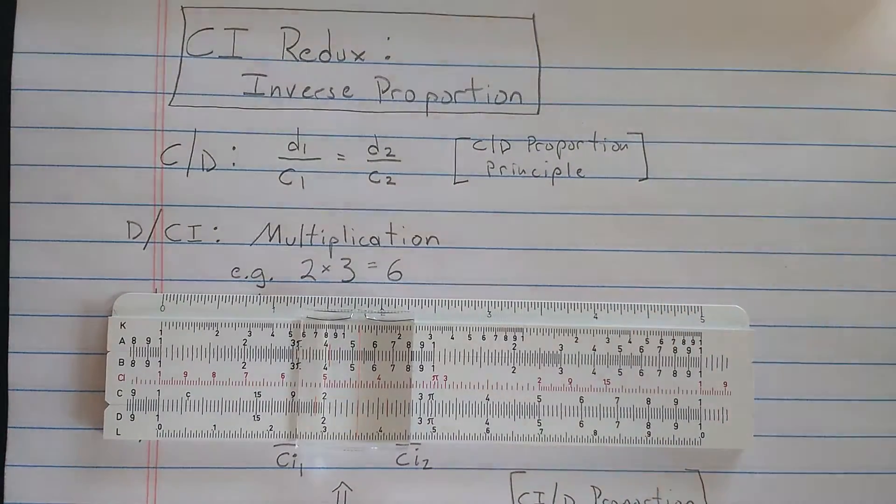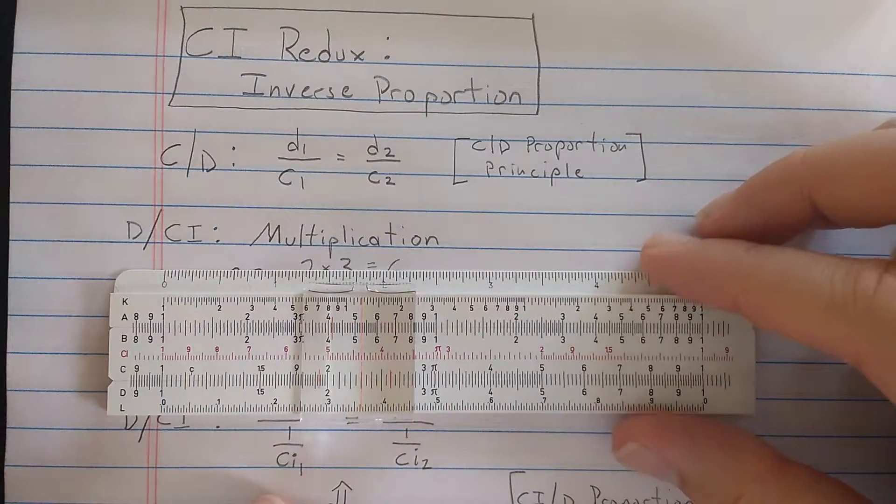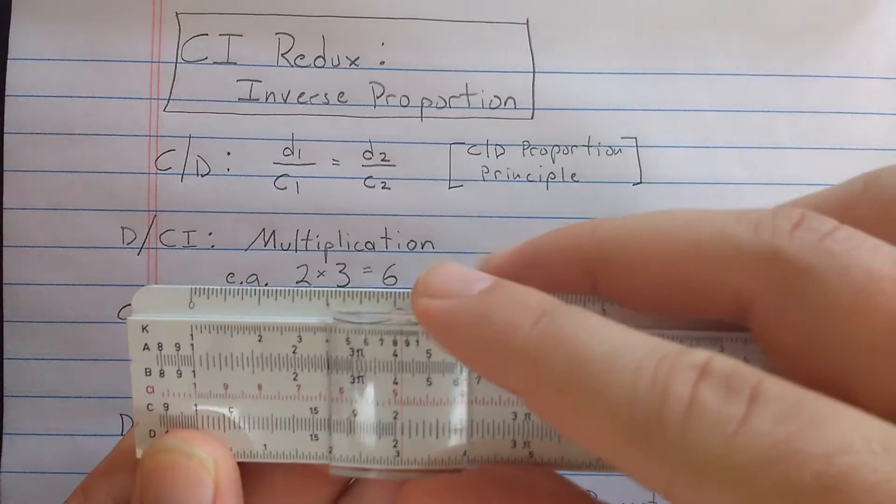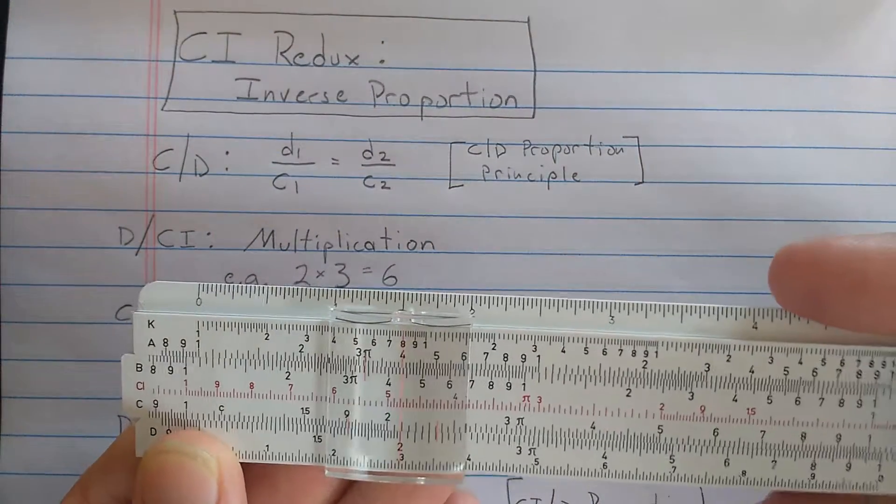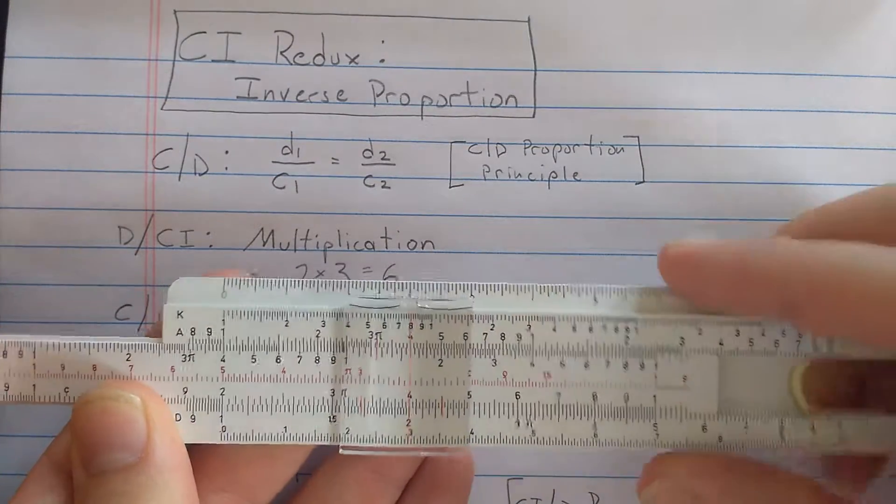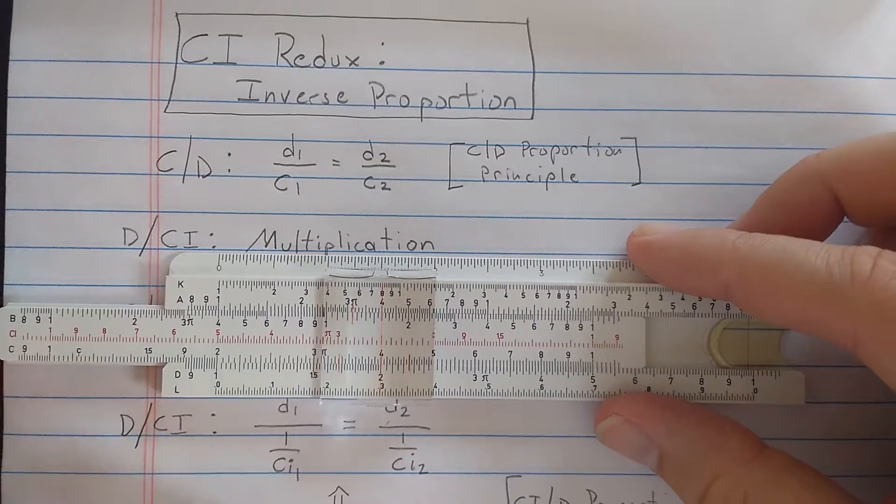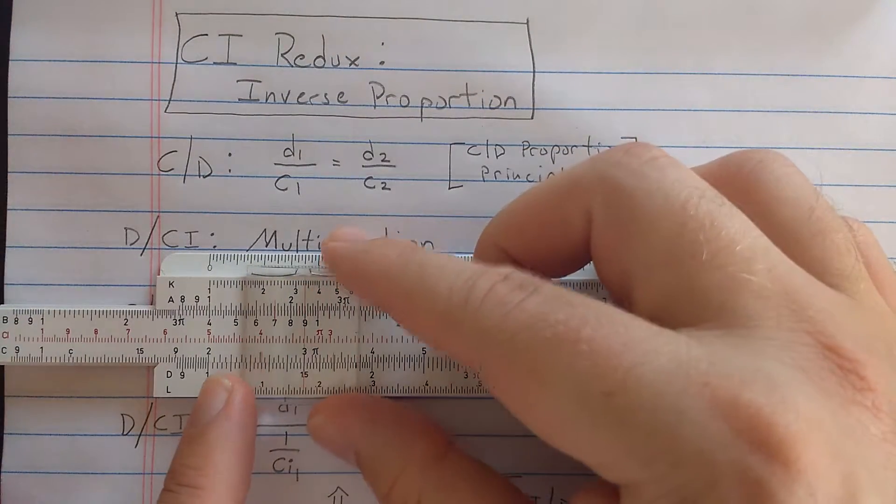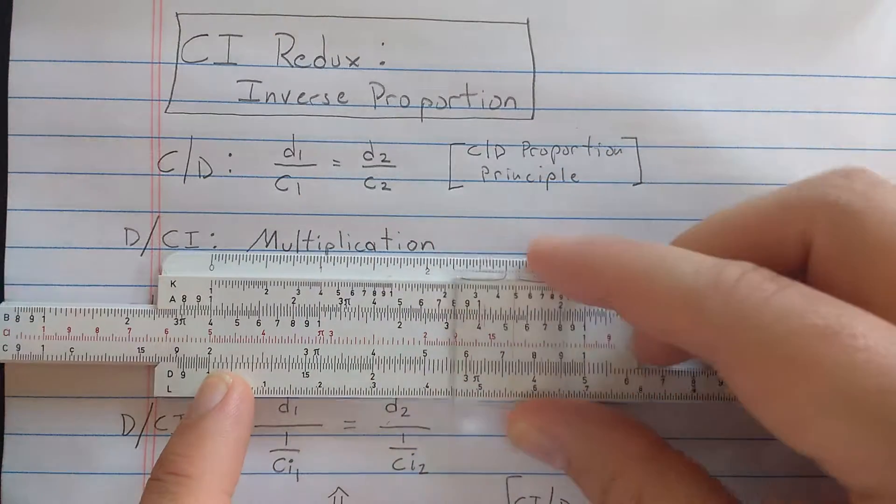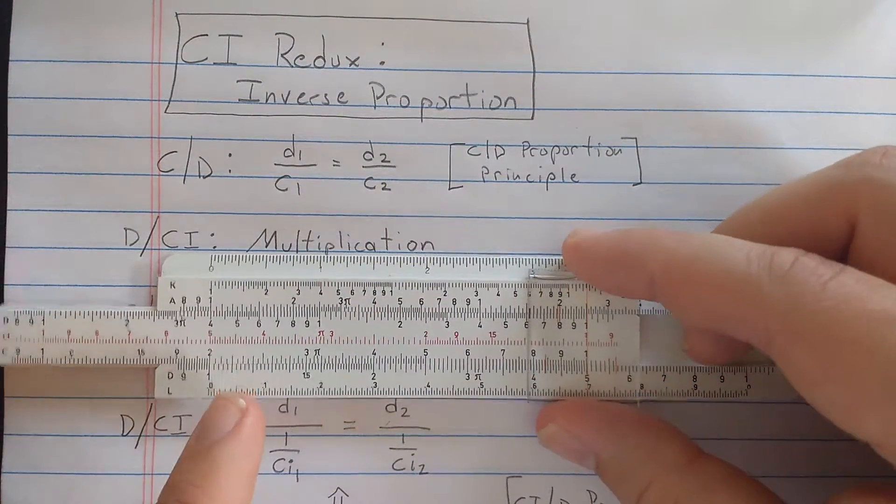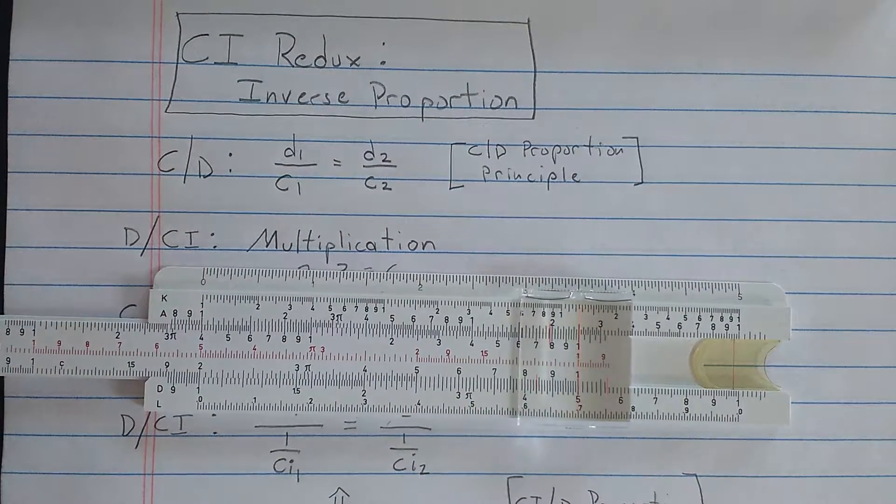can be thought of as solving proportions. So remember, if we set some sort of proportion, like say here, 2 to the 4, then that same proportion is set everywhere. Here, 1 to 2. Here, 1.5 to 3. Here, 4 to 8. 5 to 10. And so the C and the D can be used to solve proportion.